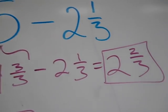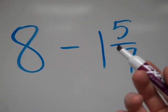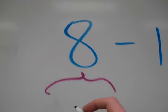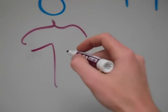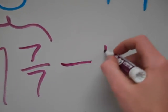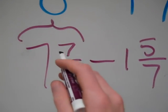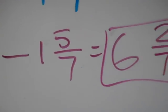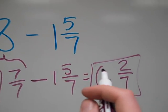I'll show you one more of those. Here I have 8 minus 1 and 5 sevenths — again subtracting a mixed number from a whole number. So I make this 8 into 7 and 7 sevenths. Now I can take away 1 and 5 sevenths: 7 minus 1 is 6, and 7 minus 5 is 2, keeping my denominator. So it's 6 and 2 sevenths — not 7 and 5 sevenths like people sometimes think.